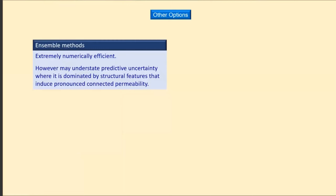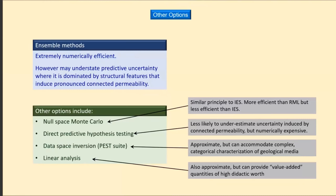Despite their amazing strengths, ensemble methods in their current implementation can sometimes fall short — particularly where we have extensively connected permeability important to a prediction, such as pervasive alluvial channel features or structural features like faults that disrupt the host geology. There are other methods available, such as direct predictive hypothesis testing, which can overcome these connectivity issues. With the remaining time, I'd like to focus on linear analysis, which is more approximate than those other methods, but in terms of its didactic worth, it can't be beaten. It includes the old sensitivity analysis but can do much more — including quantifying the uncertainty of model parameters and predictions, and exploring how data scarcity and model simplification can impact these uncertainties.